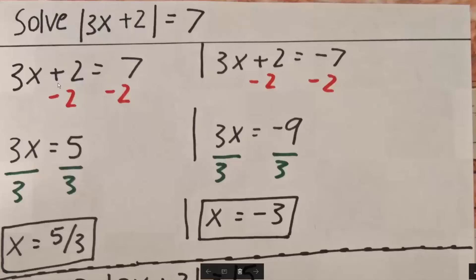So if we subtract 2 from both sides, we get 3x is equal to 5. And we can divide by 3, and we get x is equal to 5 over 3.